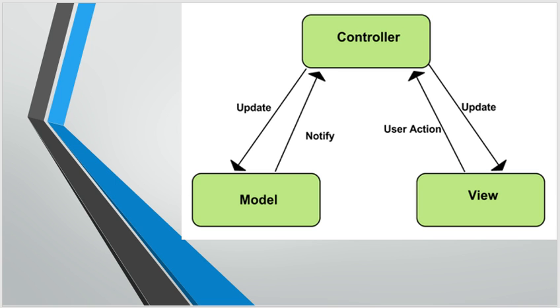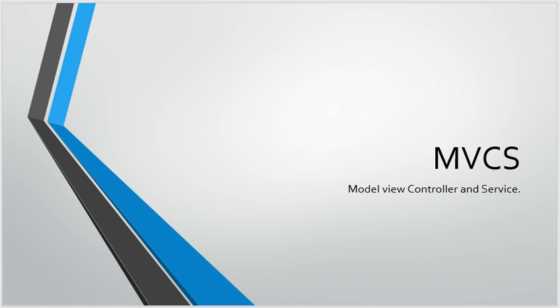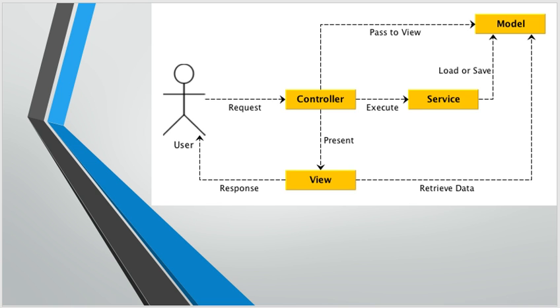We can address this with a pattern I'll call MVCS-D. Here D stands for the DAO layer — Data Access Object — and S stands for Service. The layers are: View, Controller, Model, Service, DAO, and Database. A user makes a request that goes to the controller, and the controller won't have any logic — it will just know what model to update and what view to call.